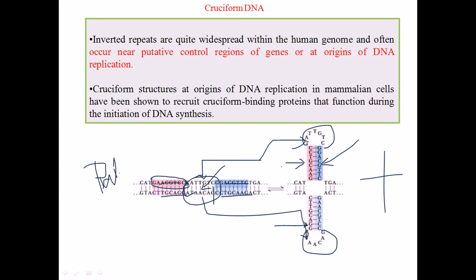Now we can find this cruciform DNA near positive control regions of a gene, at the origin of DNA replication. So that's why the importance of having this cruciform DNA at the starting point of DNA replication is really, really important. So if we can find this cruciform DNA at the beginning of DNA replication,